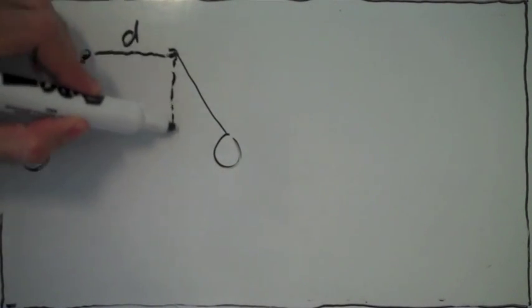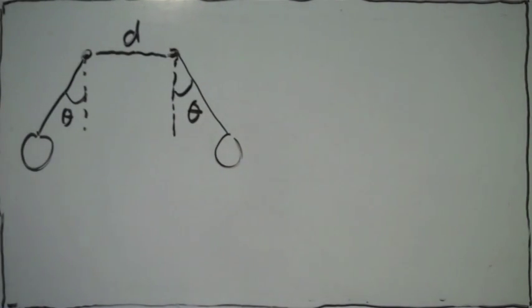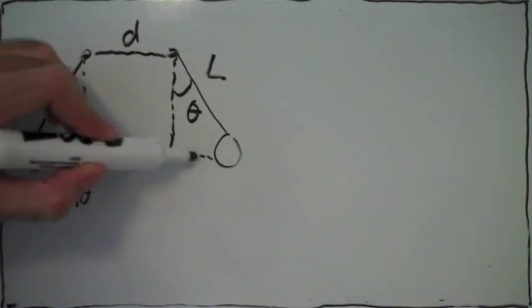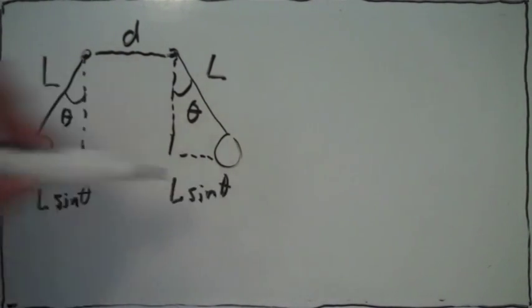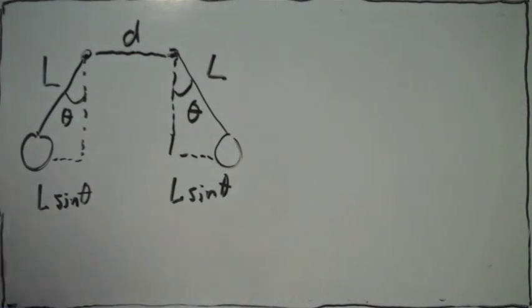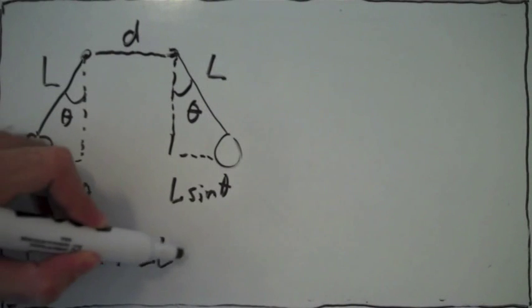So each mass makes an angle of theta with the vertical. The length of the strings is L. So we can calculate the total separation distance between the two masses. The total separation distance is going to be little d plus 2L sine theta.